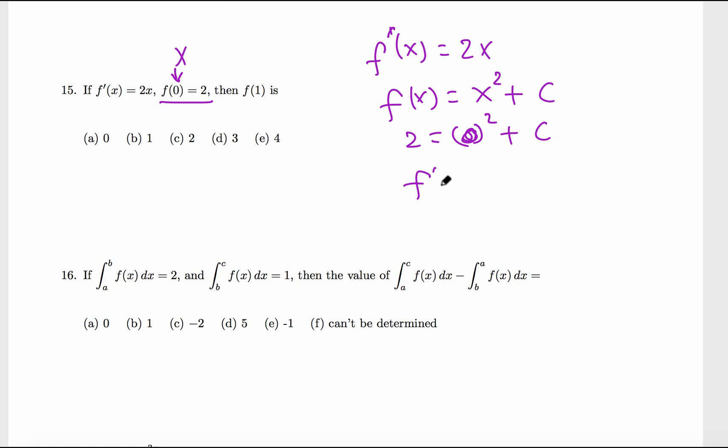So the function is f(x) = x² plus 2. We found c equals 2 and now we plug this back. So x² plus 2, and finally f at 1 means replace x by 1, so 1² is 1 plus 2. 1 plus 2 is 3.